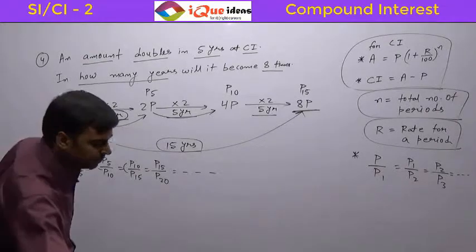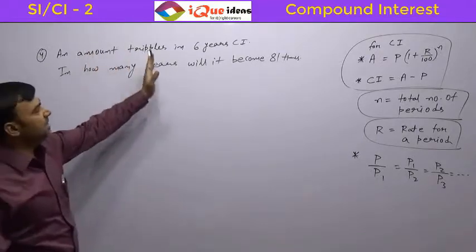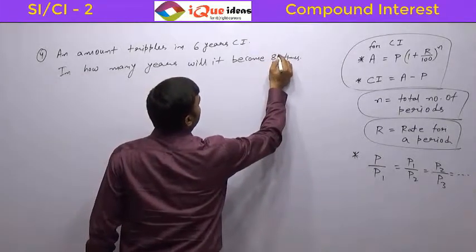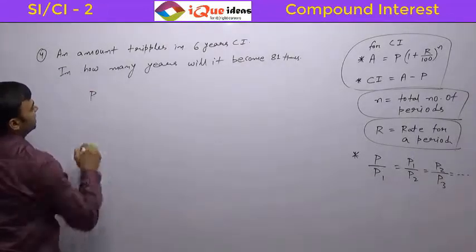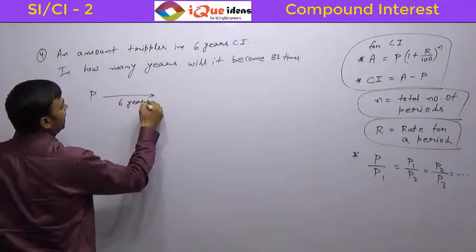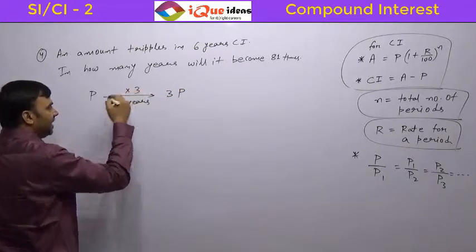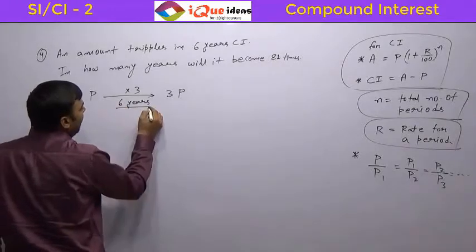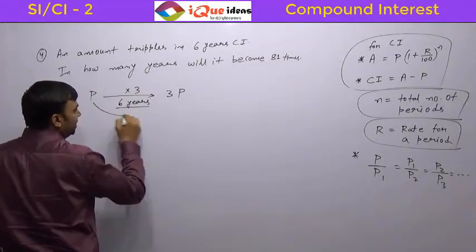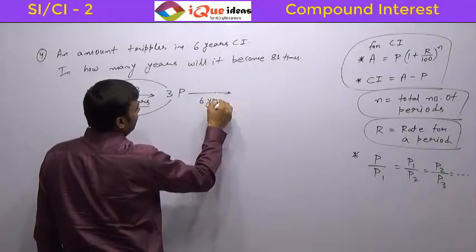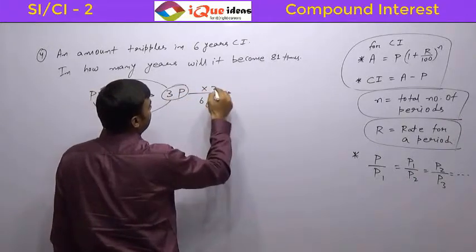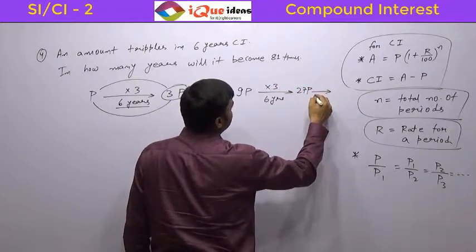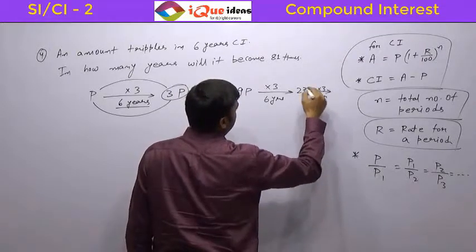Let us take another question on this. In this question it says an amount triples in 6 years compound interest. In how many years will it become 81 times? Let us say P is the initial amount. After 6 years it becomes 3P. That means it has become 3 times, because it is tripling after 6 years. Now what we have learnt here, in the same gap it is going to be multiplied by the same number. So in 6 years it is being multiplied by 3. So in the next 6 years it is again going to be multiplied by 3, so it becomes 3 times 3 is 9P. Again 6 years it is again going to be multiplied by 3, so it becomes 27P. And again 6 years it is going to be multiplied by 3. So 27 into 3 is 81P.